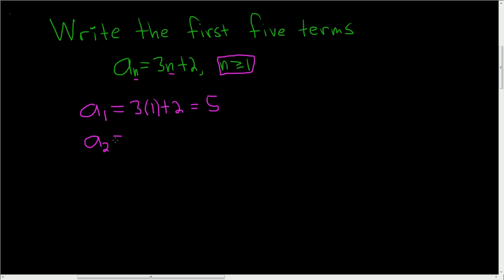a sub 2, again, you just replace all the n's except this time with 2's. So 3 times 2 plus 2. So you get 6 plus 2, which is equal to 8.